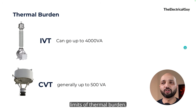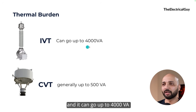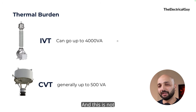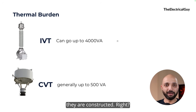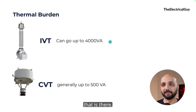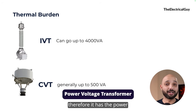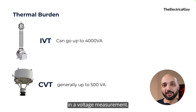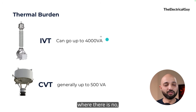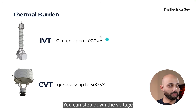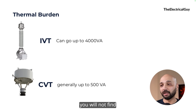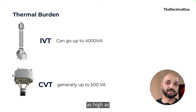IVTs have very high thermal burden limits — they can supply up to 4,000 VA depending on the configuration. This is not because they are inherently superior, but because of how they are constructed. There are even special types called power voltage transformers, which can supply significant amounts of power while also performing voltage measurement — useful in remote areas where no active grid is available. CVTs, on the other hand, do not have thermal burden as high as IVTs; they are limited to a few hundred volt-amperes.